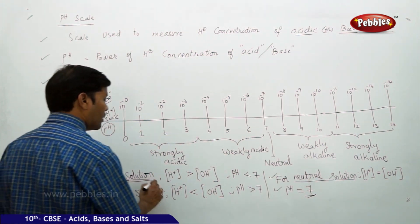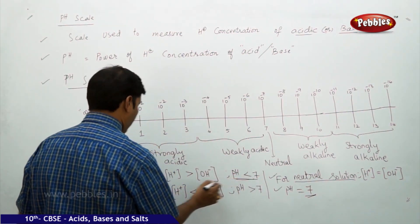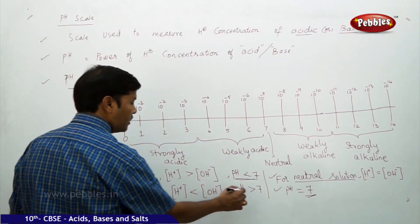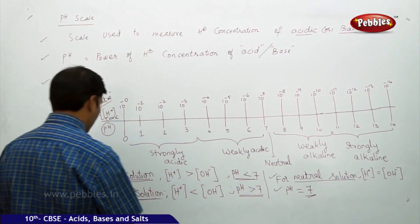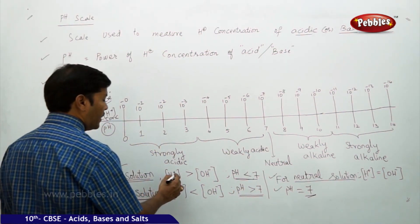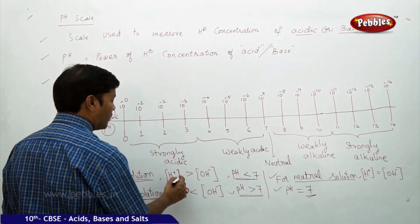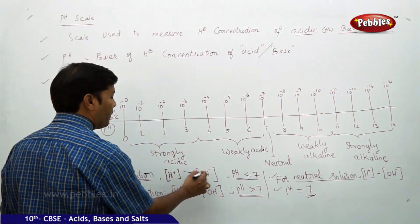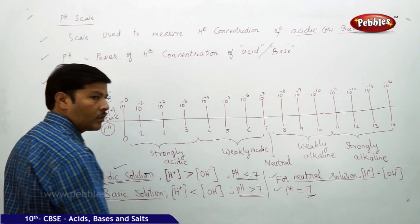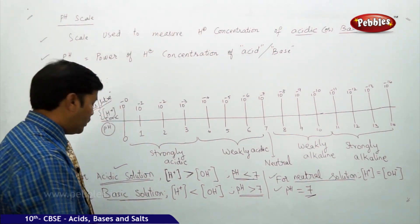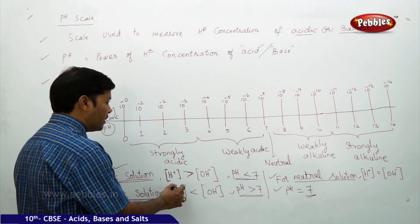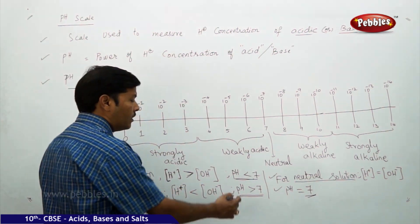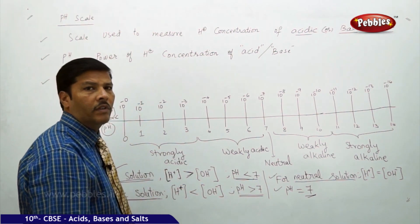To summarize: for a neutral solution, pH equals 7; for an acidic solution, pH is less than 7 with H+ ion concentration greater than OH− ion concentration; and for a basic solution, pH is greater than 7 with H+ ion concentration less than OH− ion concentration.